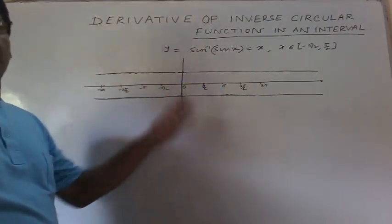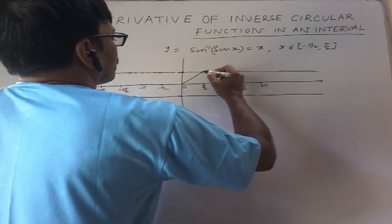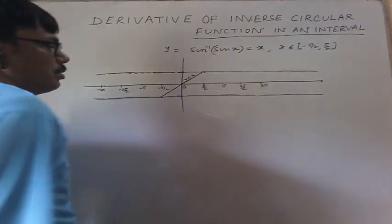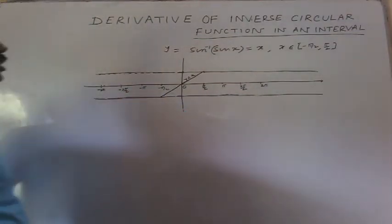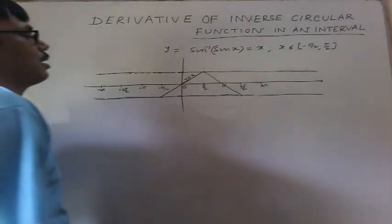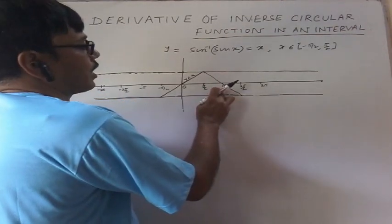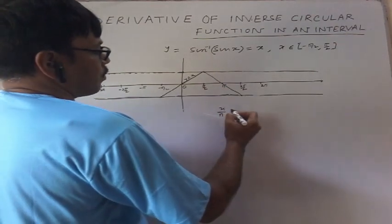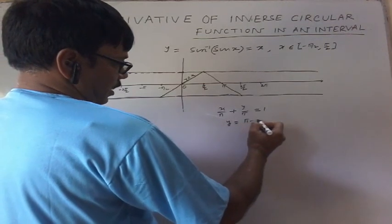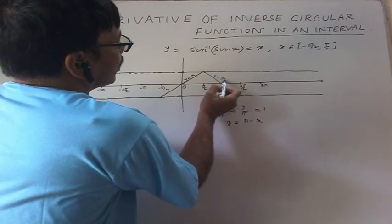Look — the graph is y = x between −π/2 and π/2. Then for the next branch, the graph is like a zigzag shape. It cuts the x-axis at π and the y-axis at π also, so x/π + y/π = 1, giving y = π − x. This branch corresponds to x in [π/2, 3π/2].